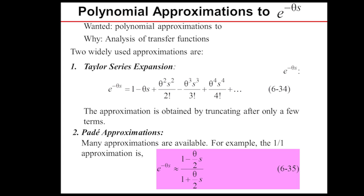Another way to do that is through a Padé approximation. This formula is given in equation 635, and it has both a numerator term and a denominator, so it's going to add a zero and a pole to our system. This is the 1-1 Padé approximation — you can have higher-order Padé approximations as well. We'll stick with the simplest forms for both Padé and Taylor series expansion as a way to approximate the time delay for a system.